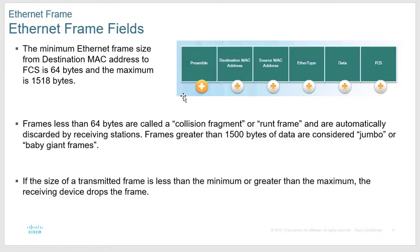Two very important things to remember: the minimum frame size is 64 bytes and the maximum frame size is 1518, although most computers are set for 1500 so that if it's a little bit over everything still works. Anything under 64 bytes is considered a runt and is dropped, and anything over 1518 is considered a giant and gets dropped.